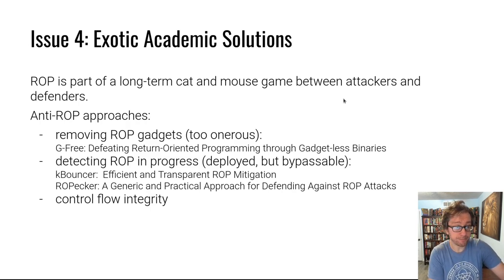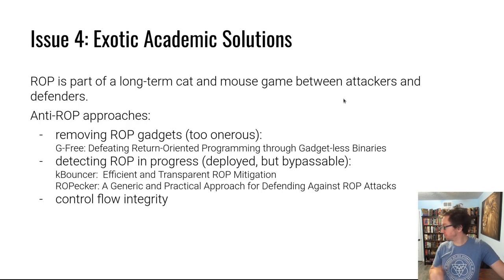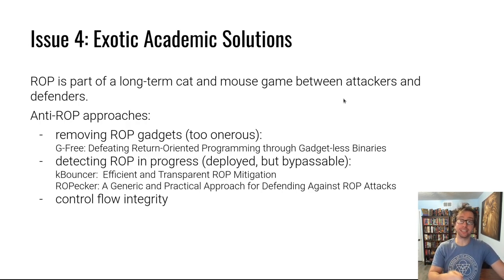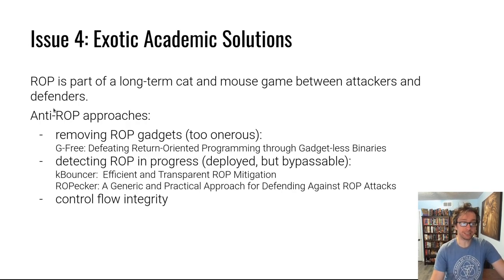You can try to detect when a ROP attack is happening: when a syscall occurs, go through the stack and see what it looks like. Or keep a processor instruction log and see how many rets were executed in the last hundred instructions — if it looks like ROP, kill the program. This is actually deployed in practice; for example, Windows protects itself against ROP using a technique called kBouncer.